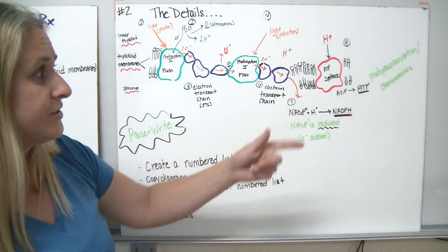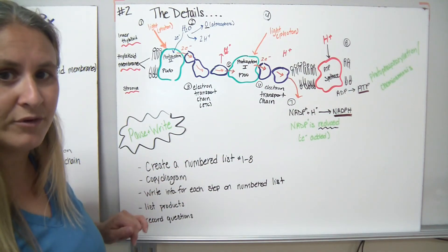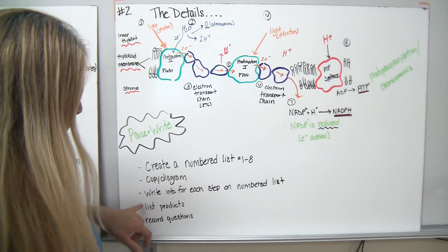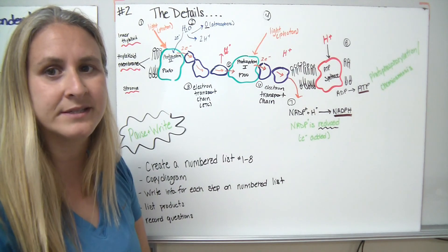So what I'd like you to do is I'd like you to make sure you have all of your numbered lists and the information for each of the numbers, identifying the products, and then writing down any questions that you might have for the overall process.